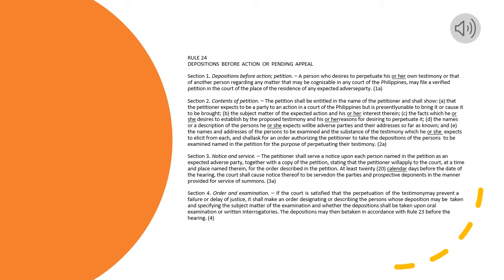Section 3. Notice and Service. The petitioner shall serve a notice upon each person named in the petition as an expected adverse party, together with a copy of the petition, stating that the petitioner will apply to the court, at a time and place named therein, for the order described in the petition. At least 20 calendar days before the date of the hearing, the court shall cause notice thereof to be served on the parties and prospective deponents in the manner provided for service of summons.